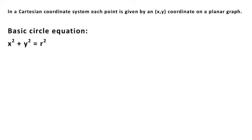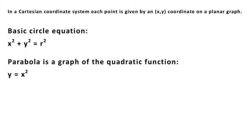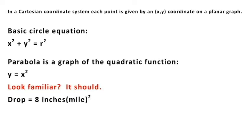In a Cartesian coordinate system each point is given by an x-y coordinate on a planar graph. Here's the basic circle equation. A parabola is a graph of the quadratic function y equals x squared. You can turn a parabola sideways on a graph and it's not a function anymore, but that's not relevant here. This should look familiar — because that drop equals eight inches times your miles squared is a parabola. It's not a circle. I'm going to model the earth as a sphere and take a section of it — which would be a circle — and compare it to that drop equals eight inches times miles squared to show you why it doesn't work.